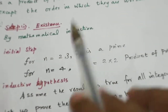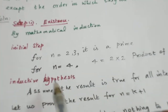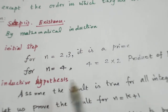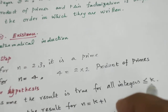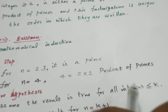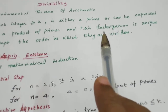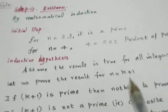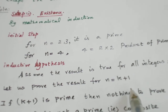So for a few values we have proved the initial steps. For the induction hypothesis, let us assume the result is true for all integers less than or equal to k. So for all integers less than or equal to k, that integer is either a prime or it can be written as a product of primes. Now let us prove the result for n = k + 1.